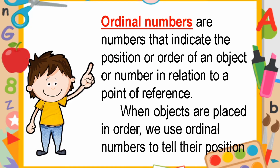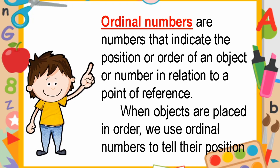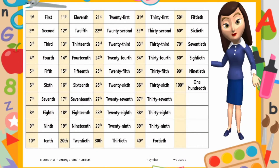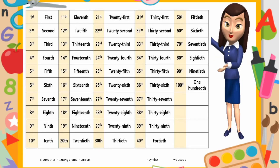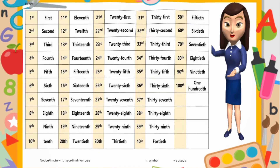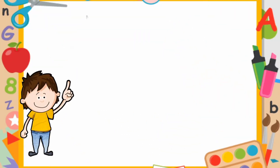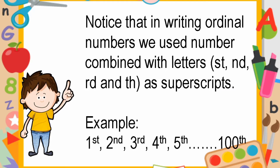Just like in ordinal numbers, there are numbers that indicate the position or order of an object or number in relation to a point of reference. When objects are placed in order, we use ordinal numbers to tell their positions. This is a list of ordinal numbers from first to one hundred. Notice that in writing ordinal numbers, we use numbers combined with letters ST, RD, ND, and TH as superscript.